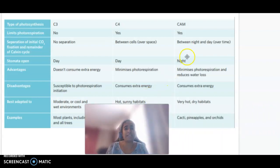CAM photosynthesis is limiting photorespiration. The separation of initial carbon dioxide is between night and day, so it happens over time. Stomata open at night. Advantages: minimizes photorespiration and reduces water loss. Disadvantages: consumption of extra energy. Best adapted to very hot, dry habitats. Examples include cactus, pineapples, and orchids.